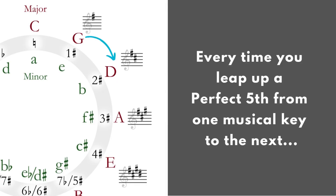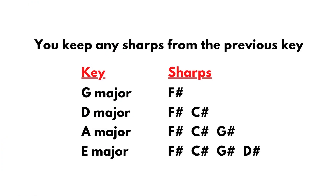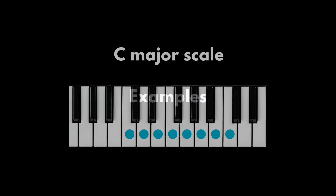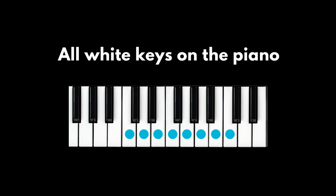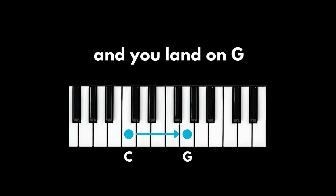Number one: every time you leap up a perfect fifth from one musical key to the next, you keep any sharps that the previous key has, and you add to those a sharp 7th scale degree. For example, the C major scale uses only white keys, so there are no sharps and no flats in C major. When you leap a perfect fifth up from C, you land on G.